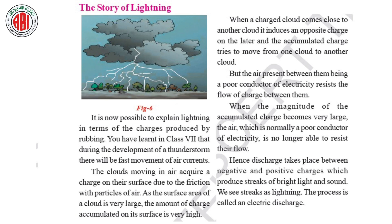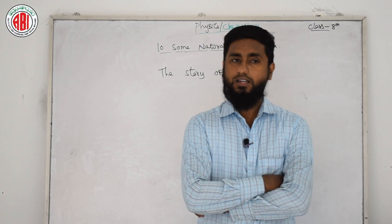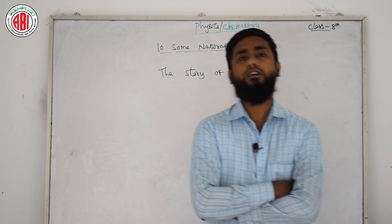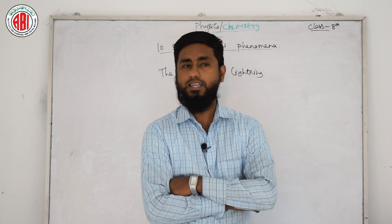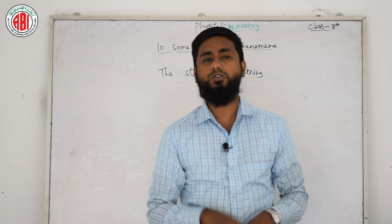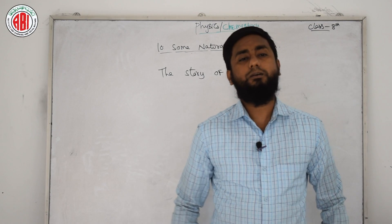It is now possible to explain lightning in terms of charges produced by rubbing। You have learnt in class 7 that during the development of a thunderstorm, there will be fast moving air currents। The clouds moving in the air acquire a charge on their surfaces due to friction with particles of air। As the surface area of a cloud is very large, the amount of charge accumulated on its surface is very high।